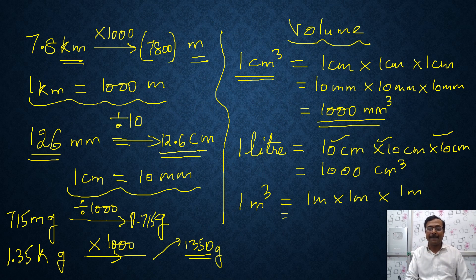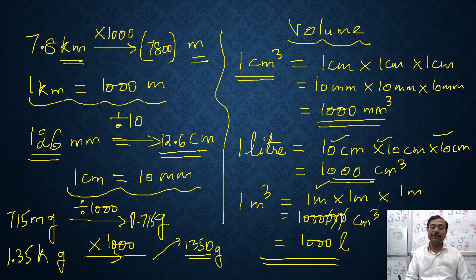So that is, if you convert that in centimeters, 1 meter has 100 centimeters. So 1 followed by 6 zeros, centimeter cube or see 1000 centimeter cube is 1 liter. So if you cancel 3 zeros, it will become 1000 liters. So 1 meter cube is 1000 liters.